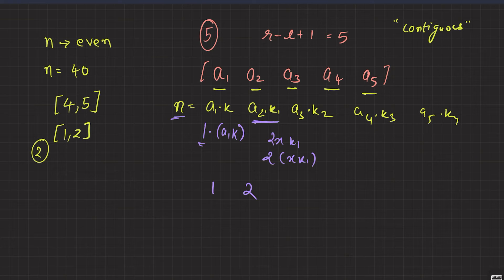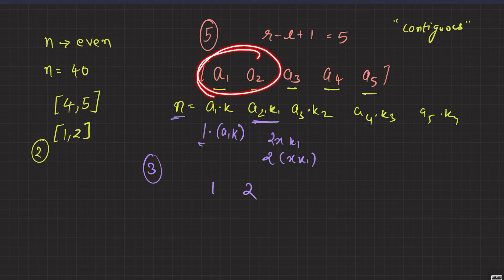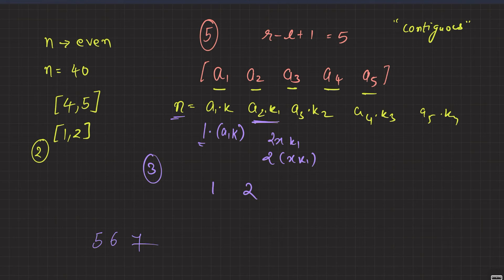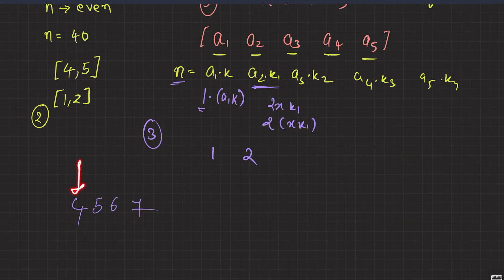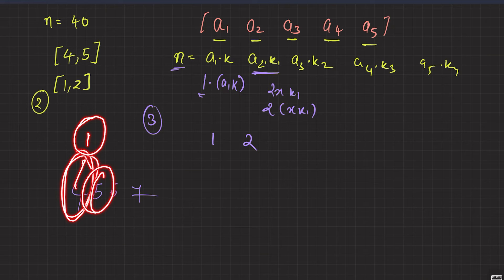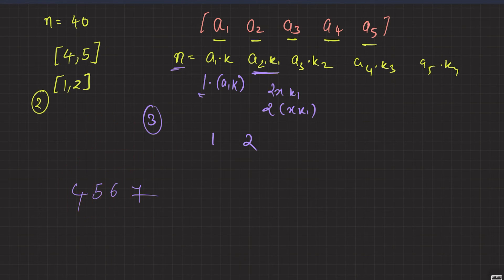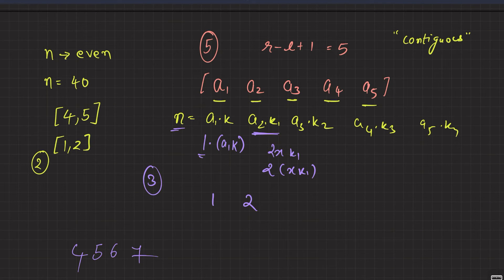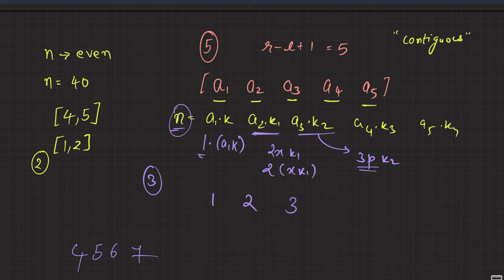Similarly for 3: if a1 is not a multiple of 3, and a2 is not a multiple of 3, then a3 definitely is. For example in 4, 5, 6 - if 4 leaves remainder 1 and 5 leaves remainder 2 when divided by 3, then 6 leaves remainder 0. So a3 = 3 * p, and since N is a multiple of a3 and a3 is a multiple of 3, by transitivity N is a multiple of 3.